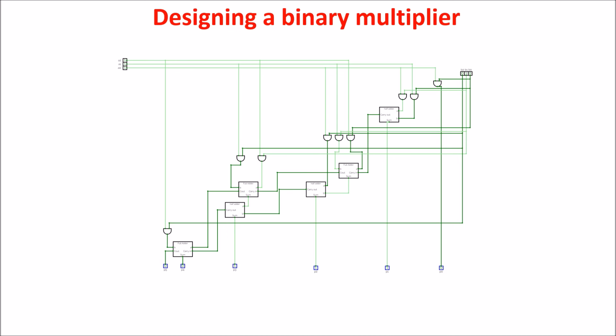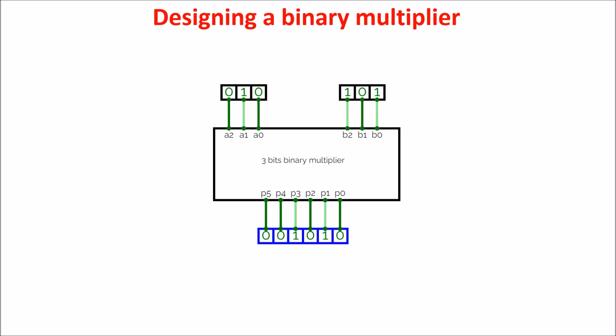Here, we replicate in Circuitverse Simulator the 3-bit multiplier we draw on paper. You can see the six different stages composed by AND gate and full and half-adder. We put the circuit into a box for a better view. For example, this is 2 times 5 equals 10.